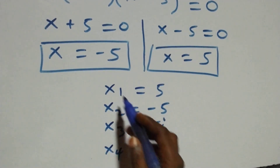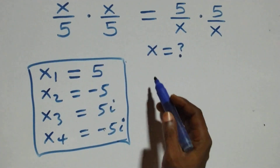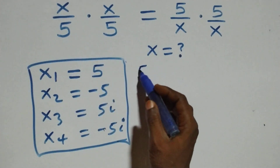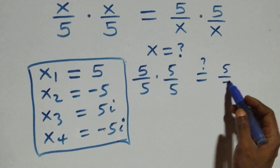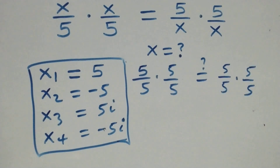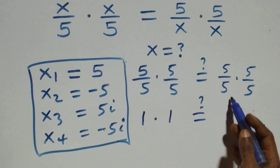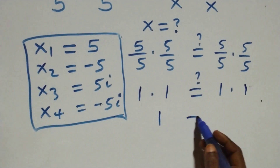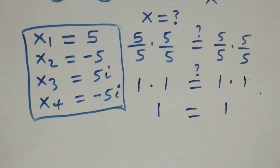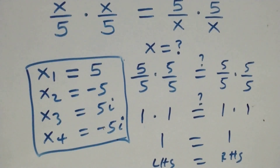Let's check whether these satisfy the original problem. Substituting x equals 5: 5 over 5 times 5 over 5 equals 5 over 5 plus 2 times 5 over 5. This simplifies to 1 times 1 equals 1 times 1, so 1 equals 1. The left hand side equals the right hand side, so x equals 5 satisfies the problem.